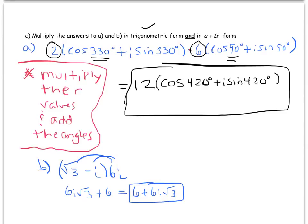The other thing to notice is that if we wanted to turn this trig form answer into standard form, we would just have to do the cosine of 420 degrees. Let's just do that as an exercise, just so we can compare and make sure we get the same thing.